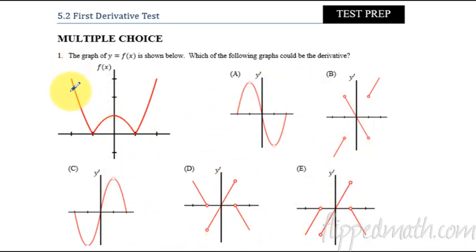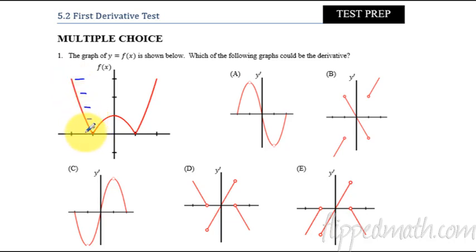So that means we're looking at the slope. Here we have a slope that's negative, negative, negative, and it's still negative, but you can see that it's not quite as negative as it was up here. It's like it's starting to barely smooth out, but not much. Then all of a sudden, there is no derivative — the derivative does not exist, so I'm going to put DNE to remind myself that.